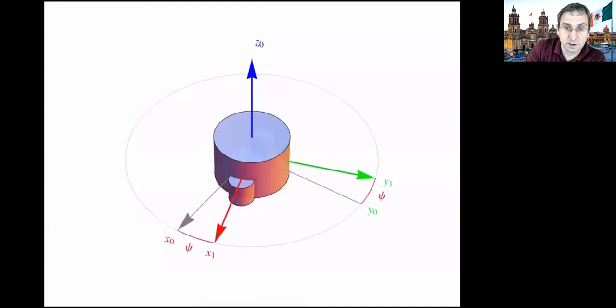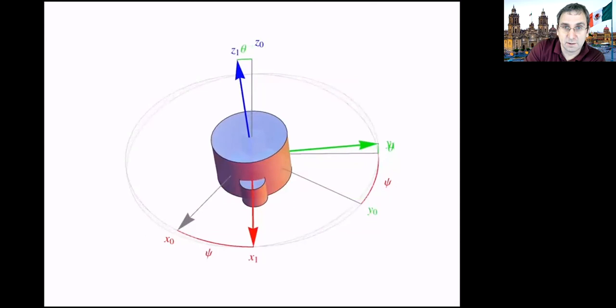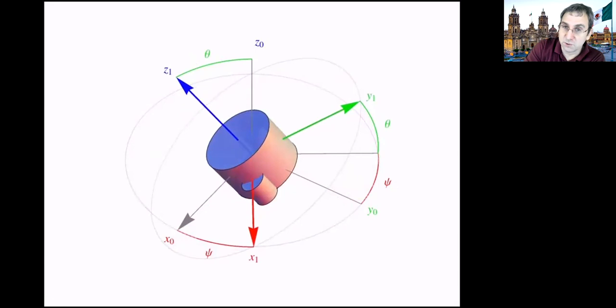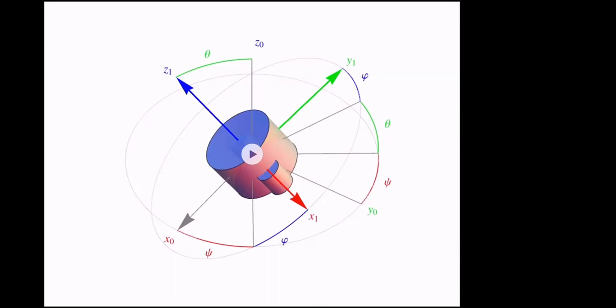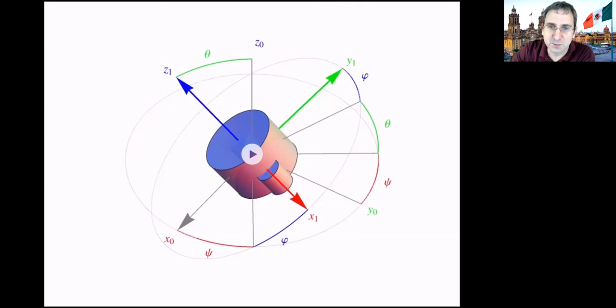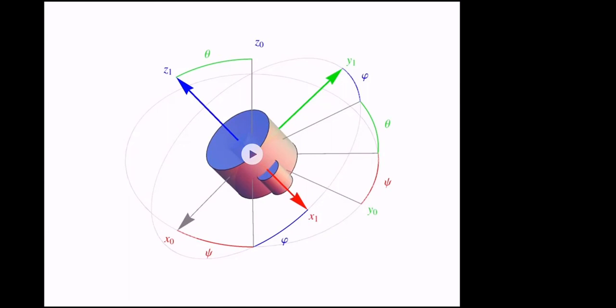A brief video of the 3-1-3 rotation is shown: first a rotation about the third axis, then about the first (red) axis, then a final rotation about the third axis in its new direction. A student asks whether the rotation matrices for each axis are always the same — yes, it's just a matter of multiplying the same fundamental rotation matrices in a different order.